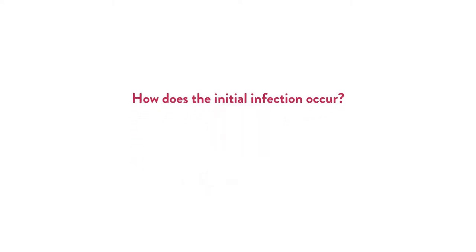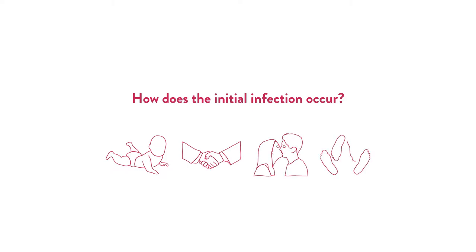How does the initial infection occur? Most people are infected with the virus at birth. However, transmission can also occur through skin contact, kissing or sexual intercourse.